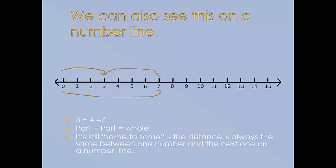We can also see this on a number line. 3 plus 4 equals 7. Part plus part equals whole. It's the same throughout—the distance is always the same between one number and the next anywhere on a number line.